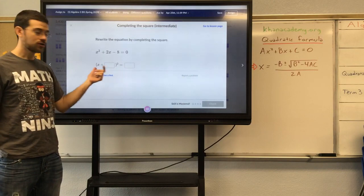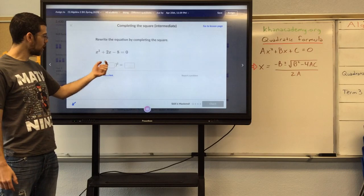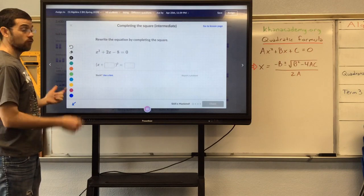They tell us to rewrite the equation by completing the square. So here's our equation, x squared plus 2x minus 8 equals 0. They give us a couple boxes, so we have to rearrange this, complete the square, and fill in these two constants.